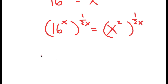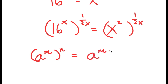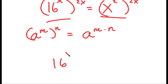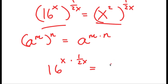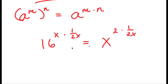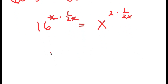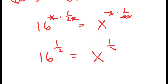If I have something in the form a to the power of m to the power of n, this is equal to a to the power of m times n. We can use this property for both terms. 16 to the power of x times 1 over 2x — the x and x cancel out on the left-hand side, leaving 16 to the power of 1 half. And for the right-hand side, x to the power of 2 times 1 over 2x — the 2s cancel out, leaving x to the power of 1 over x.